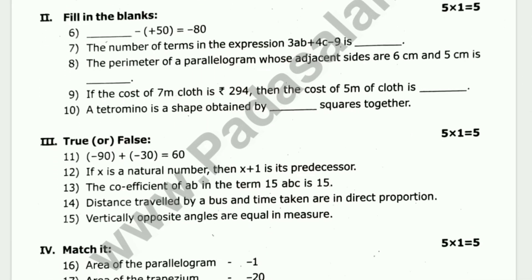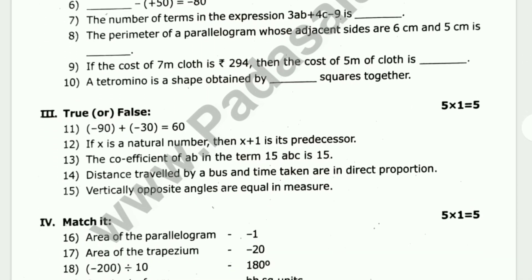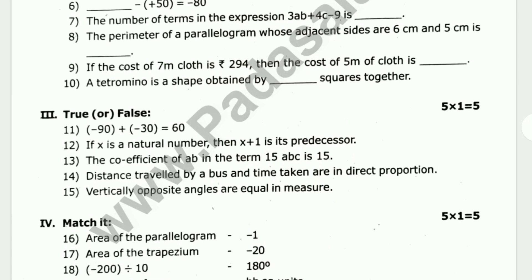Fill in the blanks. 5 ones are 5. The number of terms in the expression 3ab plus 4c minus 9 is dash. The perimeter of a parallelogram whose adjacent sides are 6 cm and 5 cm is.